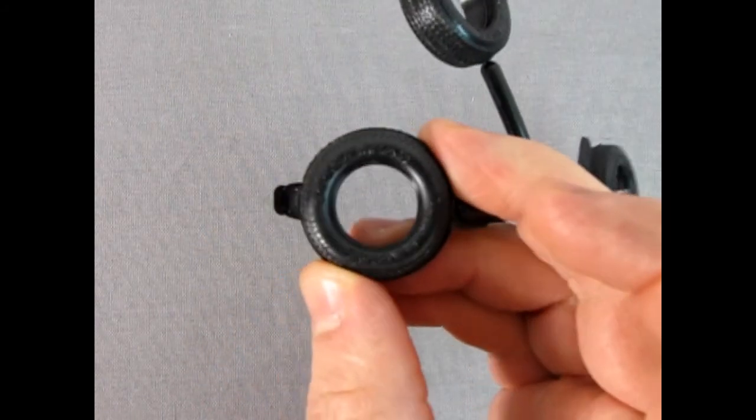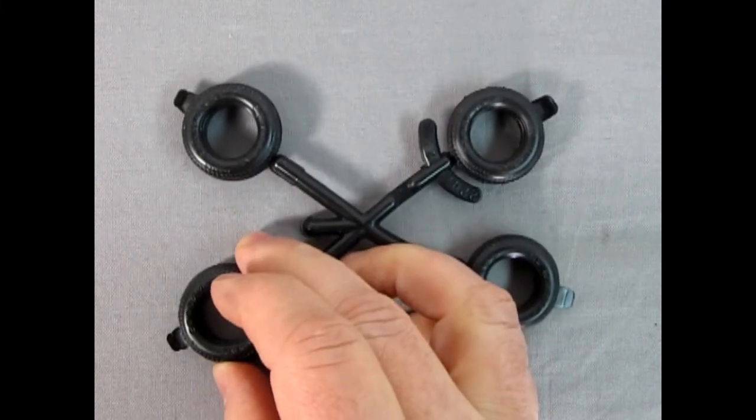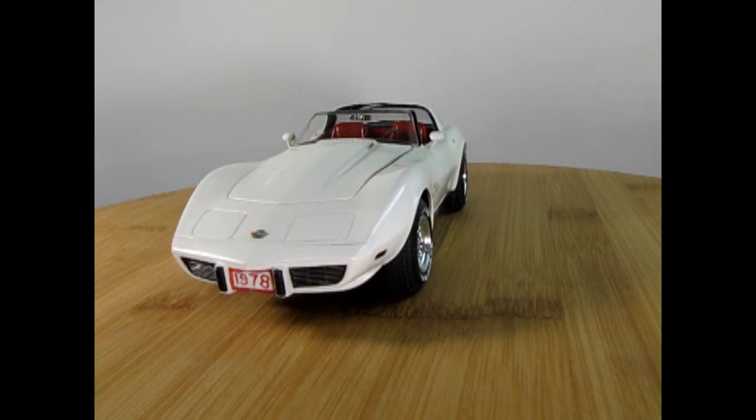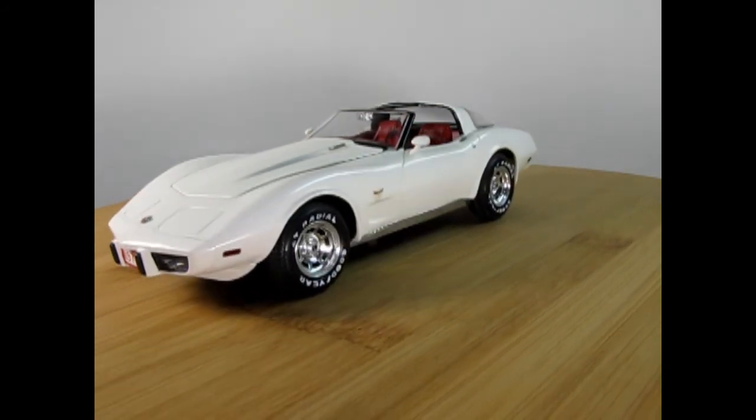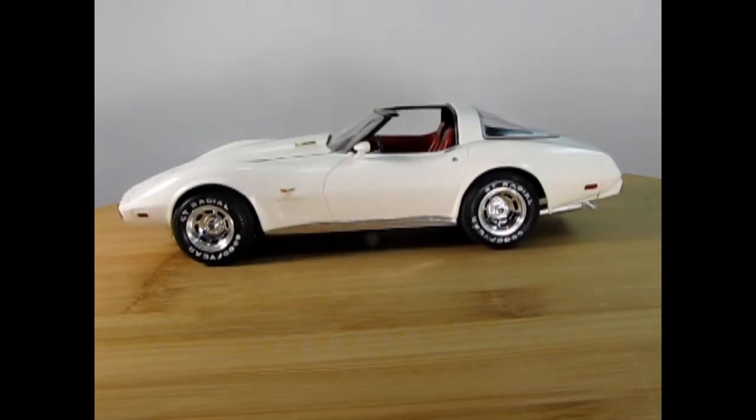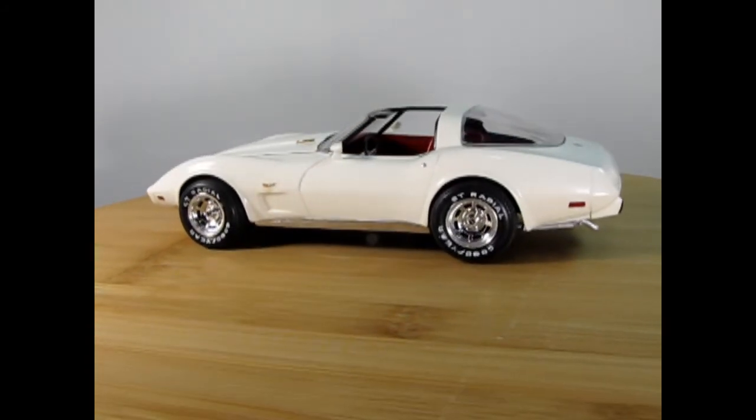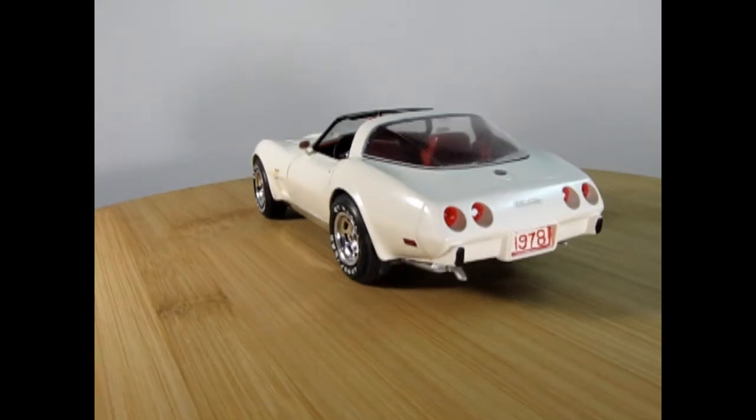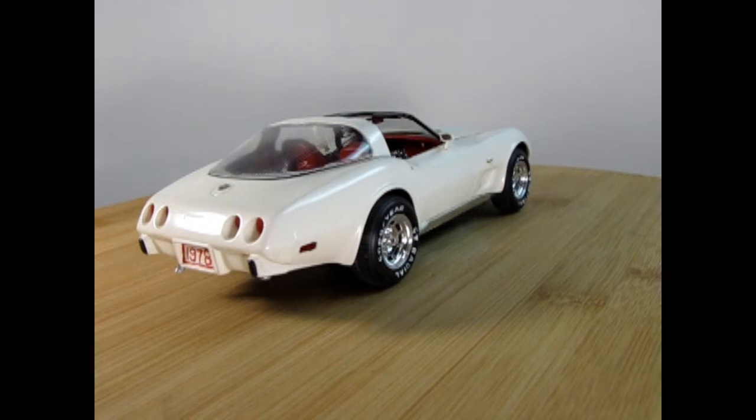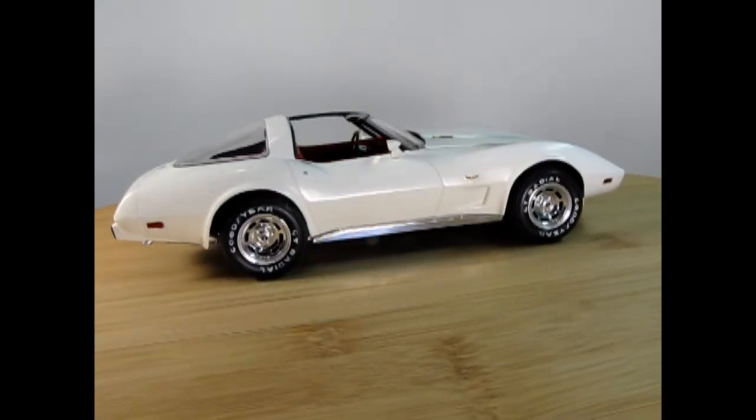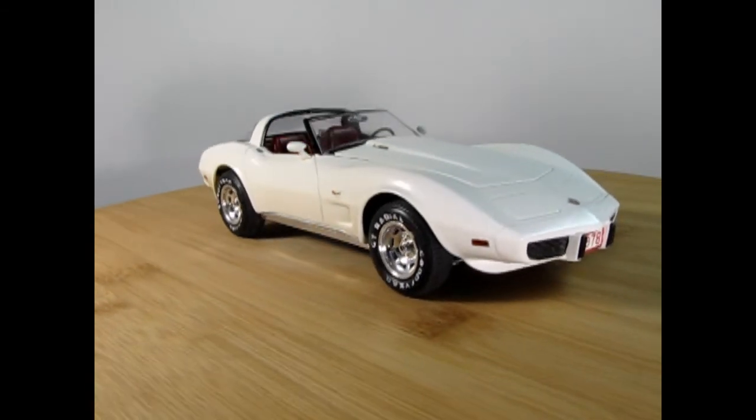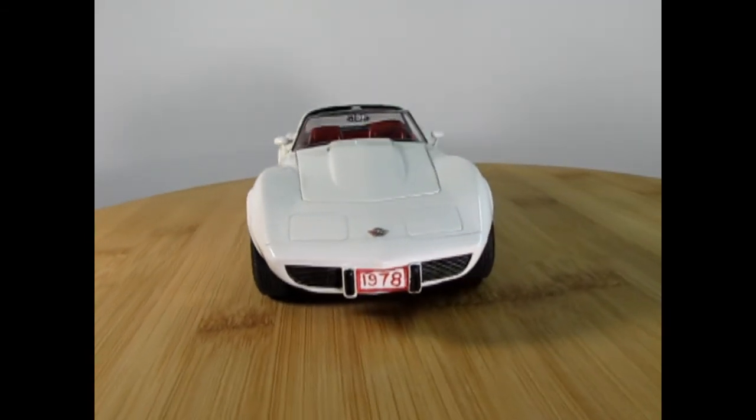Here we have a completed build of our 1978 Corvette and as you can see it does go together quite nice and will look wonderful on your display shelf. I did not use the Indy Pace Car spoilers on this but it does look good for the stock variation of the 1978 Corvette, painted this white with a red interior much like the original 1953 issue Corvette. Again a very beautiful kit by Monogram.